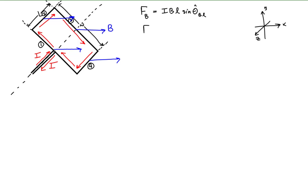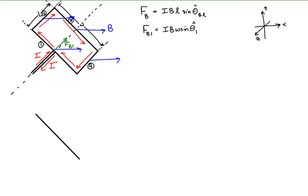For segment 1, the magnetic force is equal to the product of the current, magnitude of the magnetic field, length of the current, and the sine of the angle that the current makes with the magnetic field. The right-hand rule then tells us that this force points inward in the negative Z-direction. Let's now draw this current loop from the perspective of looking at it from the positive Z-axis. This perspective will allow us to better see the relationship between the current, magnetic field, and magnetic force on segments 2 and 4.